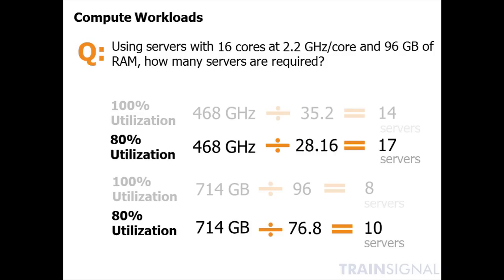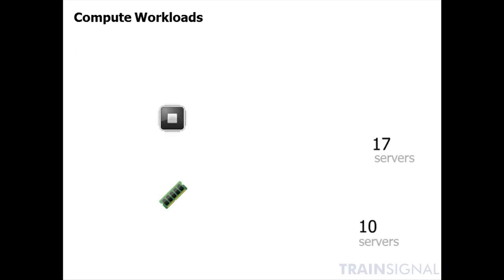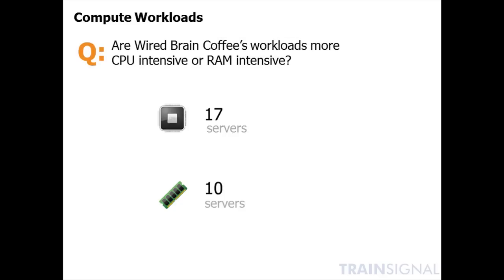So at 80% utilization, based on the logical compute information for aggregate CPU and RAM capacity, we would need 17 servers with 16 cores at 2.2 gigahertz to meet the CPU requirements, but only 10 servers at 96 gigs of RAM to meet the RAM requirements. What does that tell us about Wired Brain Coffee's workloads? Since we need more servers to satisfy CPU requirements than RAM requirements, their workloads are more CPU intensive.